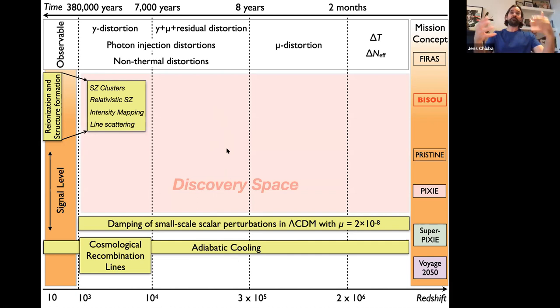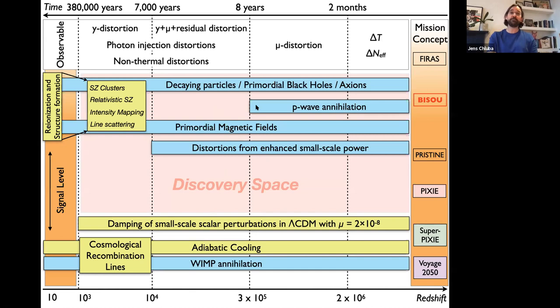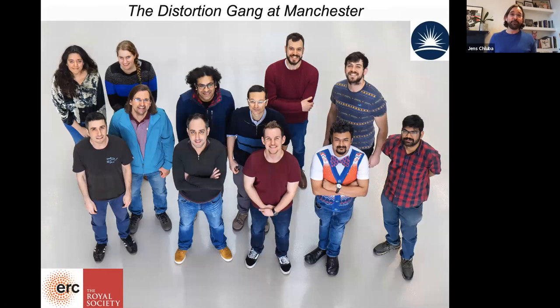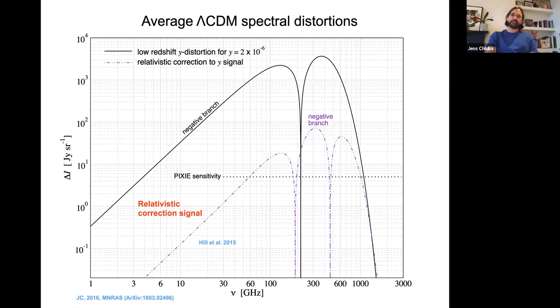Even without reaching those signal levels, there's a huge amount of discovery space. By just reducing limits on the mu parameter, we can probe many processes. This is especially interesting for non-standard physics: annihilating or decaying particles, primordial black holes, magnetic fields, and small-scale enhancements of the power spectrum. I have a big team in Manchester helping with this challenge — not only doing theoretical calculations but also looking at experimental possibilities and optimizing experiment designs.